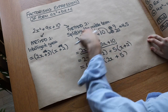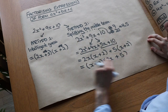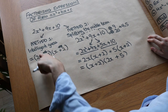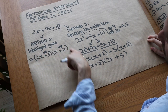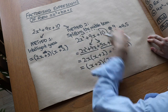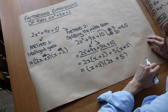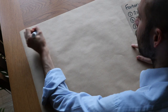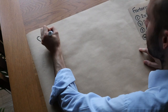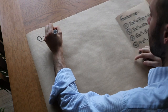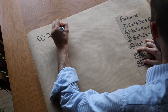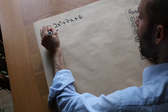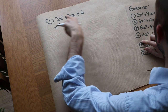Obviously this technique is much longer, but in cases where it's more difficult to make the intelligent guess — perhaps because there are too many options to consider — this method will always work. Now let's do some further examples. We've got 2X squared plus 7X plus 6, and I'll do both methods for this one.